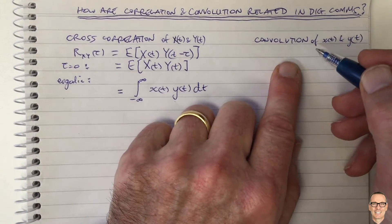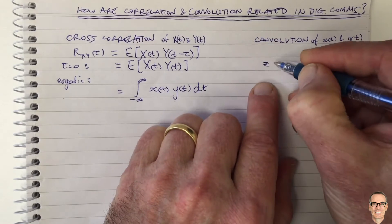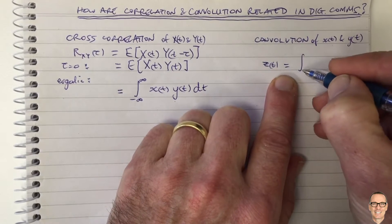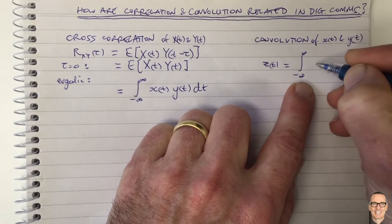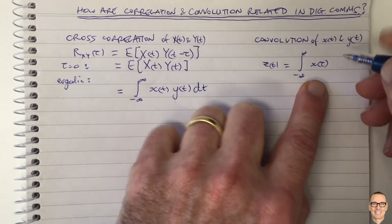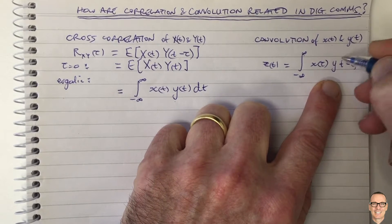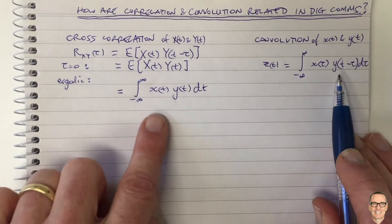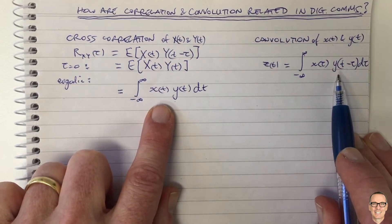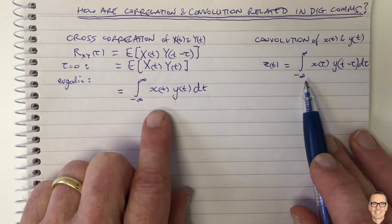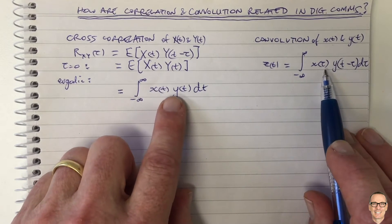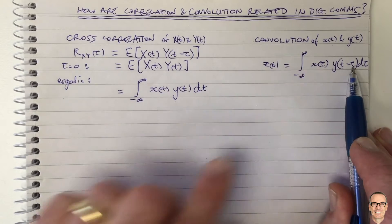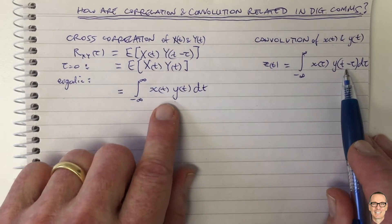Now let's contrast that with convolution. The formula for convolution — Z(t), if we convolve X and Y — is an integral from minus infinity to infinity of X(tau) times Y(t minus tau) d-tau. This is the standard definition for convolution. We can see these two equations are similar: they both involve integrals from negative infinity to infinity, and one is simply X times Y while the other is X times Y with this offset. So they are very similar, but not the same.